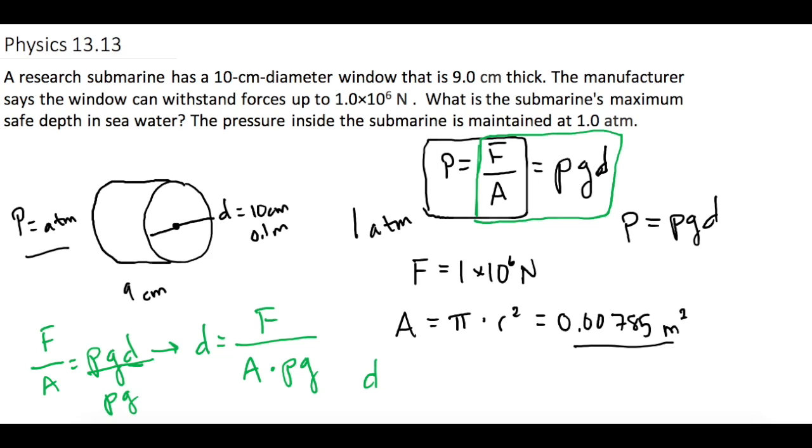So now we can plug everything in. d is equal to the force, which we say is 1 times 10 to the 6 newtons, divided by the area which we just figured out. I'm going to put it in this way because this is a rounded answer. So if we times this, my pi times the radius squared is 0.05 meters.